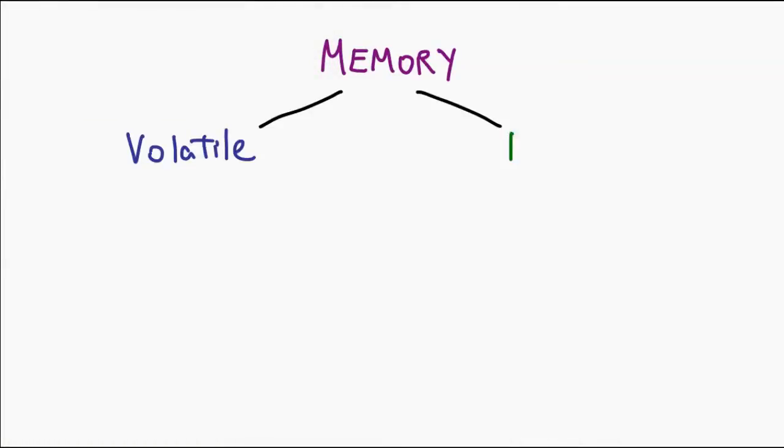We should work our way through how all these components actually work to gain some insight. Before we begin, let us discuss memory in general. There are two different types of memory: volatile memory and non-volatile memory.